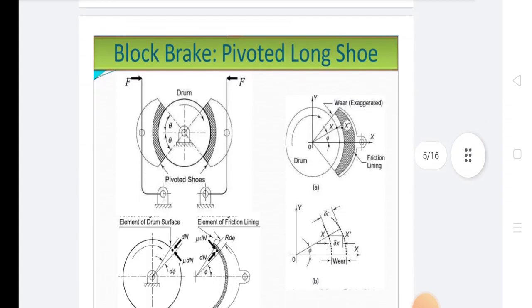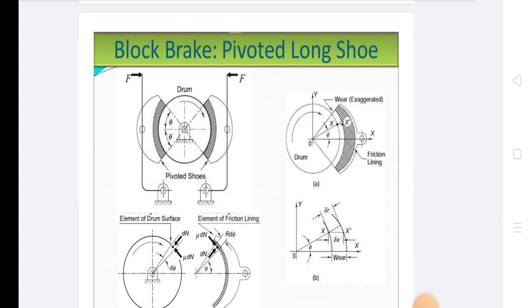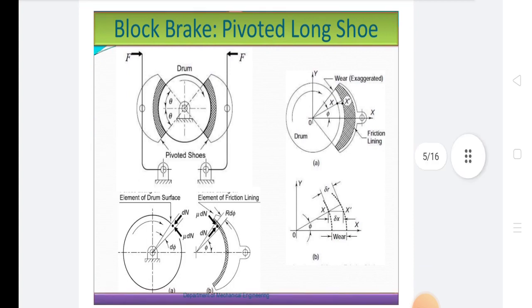Block brake or pivoted long shoe. It is already discussed that when the angle of contact is less than 60 degrees, then the intensity of normal pressure between the block and wheel is uniform. But when the angle of contact is greater than 60 degrees, the unit pressure normal to the surface of contact is less at the ends as compared to the center.